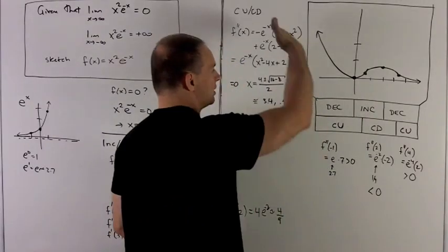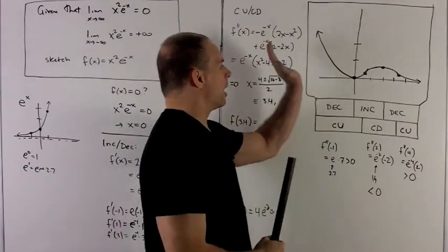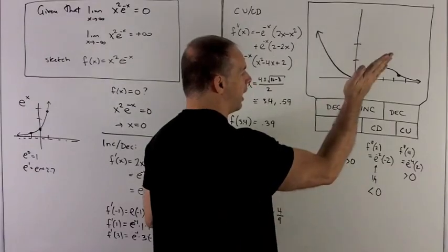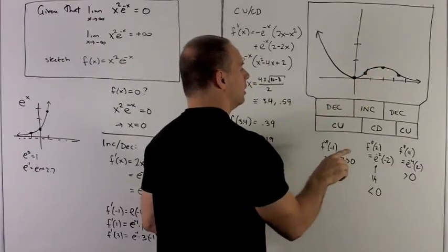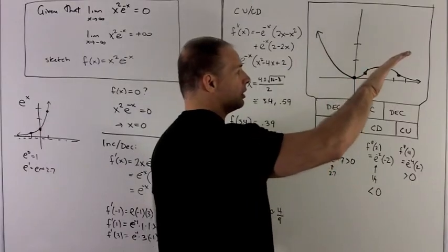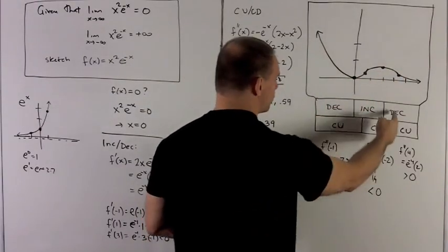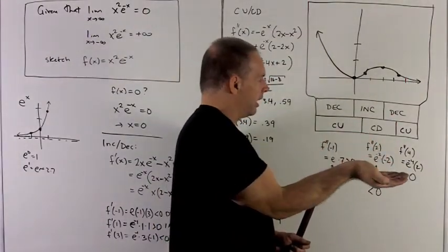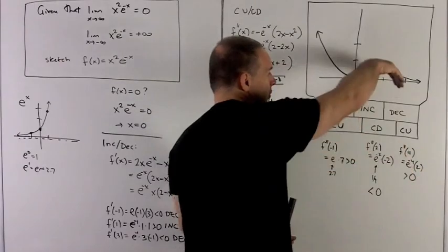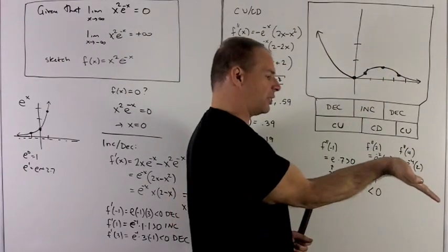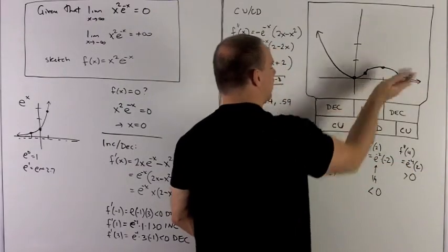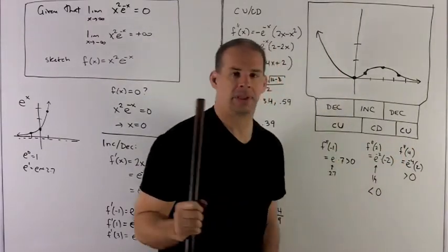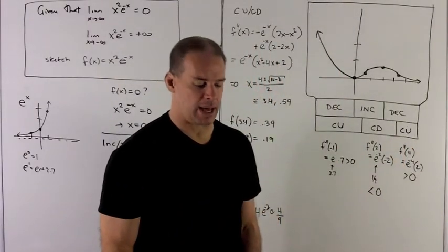Combining everything: on (-∞, 0) we're decreasing and concave up, so the curve rises like a bowl. On (0, 0.59) increasing concave up. On (0.59, 2) increasing concave down. On (2, 3.4) decreasing concave down. On (3.4, ∞) decreasing concave up, approaching zero. And on the left end, the function goes off to positive infinity. That's the graph of x²e^(-x).